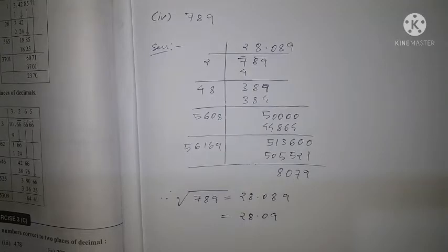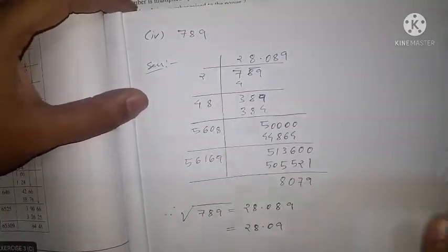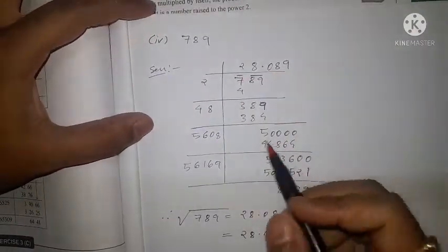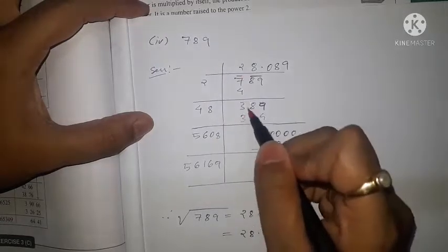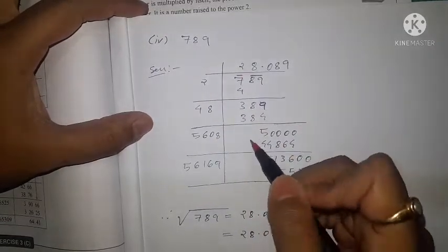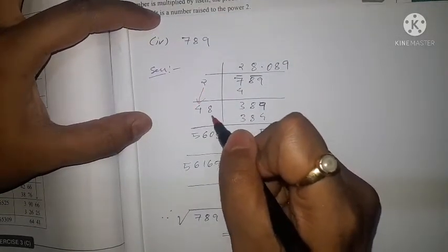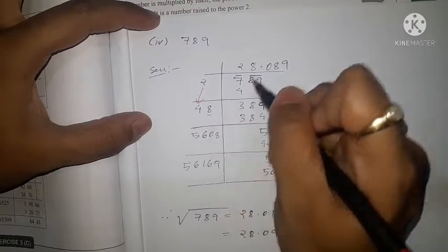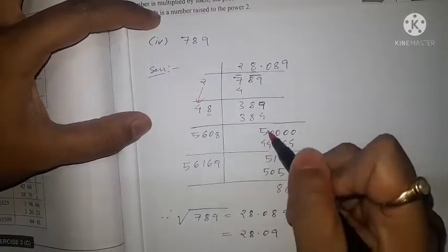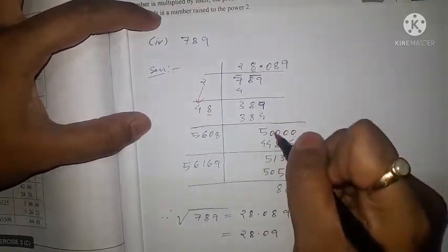Let's move to Roman numeral IV: find the square root of 789. We make pairs: 89 and 7 remains alone. Two squared is 4, remainder 3, then 89 comes down. This 2 is doubled to 4, and 48 × 8 = 384. So the remainder 5 comes down.